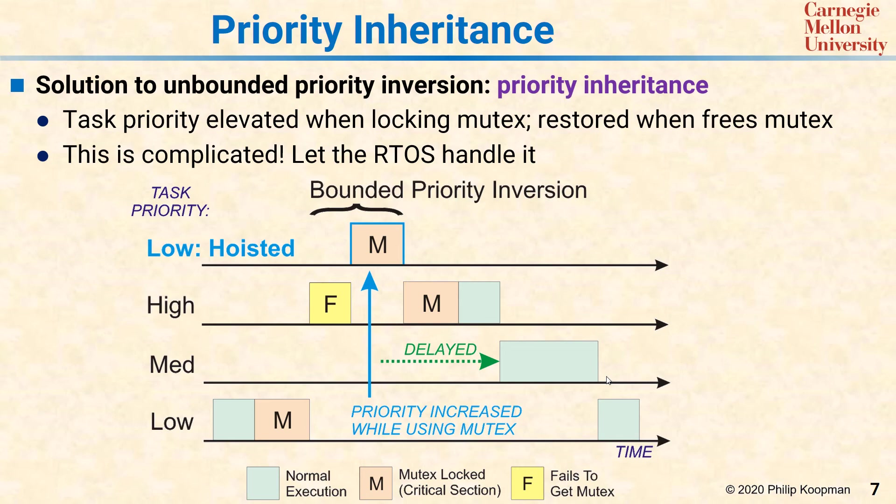The OS moves the low priority task up to the same priority as the high priority task to get that mutex released as fast as possible. Then as soon as the mutex is released, the low priority task goes back to normal and the high priority task can run. This basically guarantees that the blocking time caused by priority inversion is limited only to the runtime of the low priority task, and no intervening task can cause the unbounded problem we saw in the previous slide.